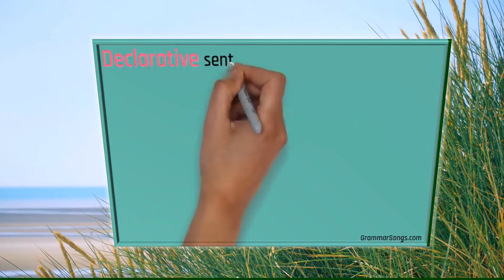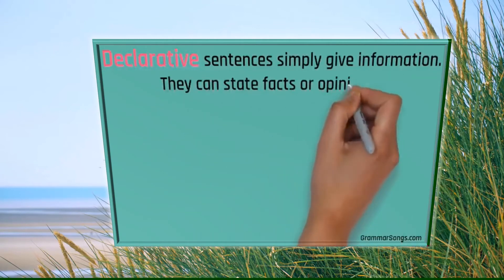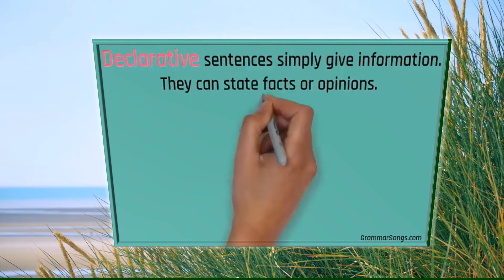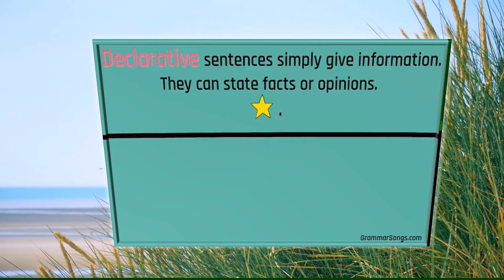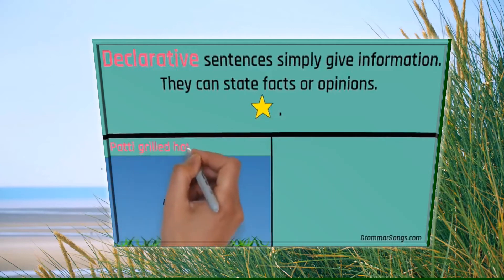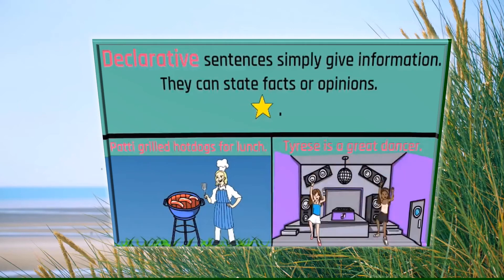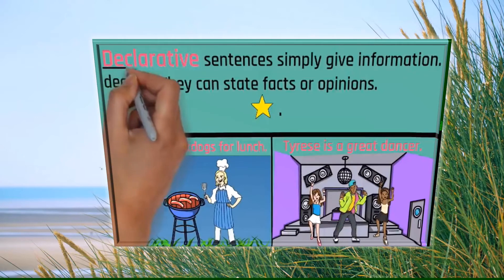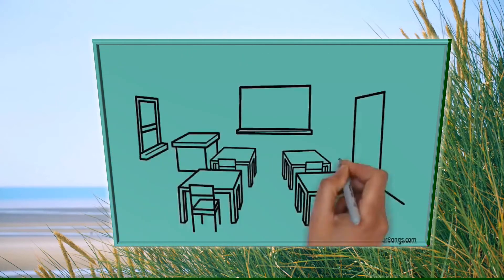Declarative sentences simply give information. They can state facts or opinions. A big clue is that declarative sentences always end with a period. For example, 'Patty grilled hot dogs for lunch' is stating a fact, and 'Tyrese is a great dancer' is stating an opinion. If you declare something, you are stating what you think or believe.